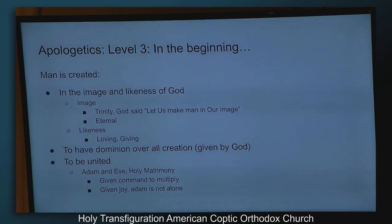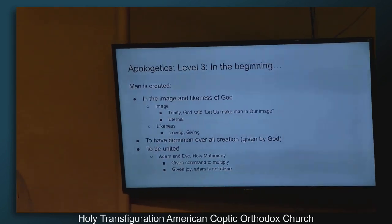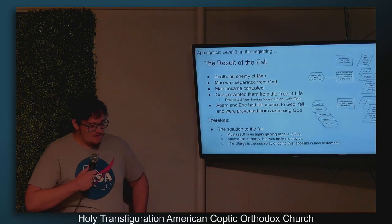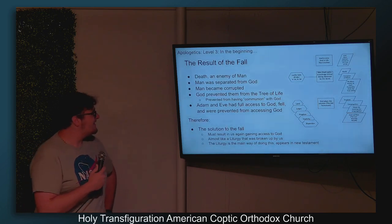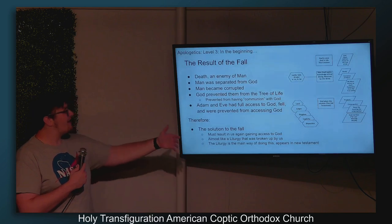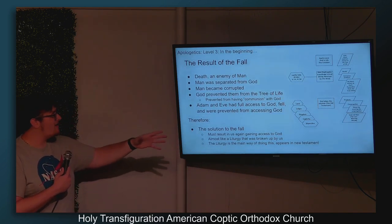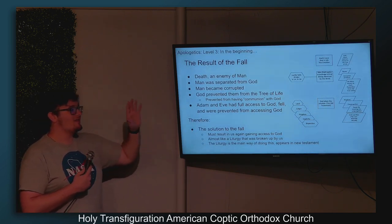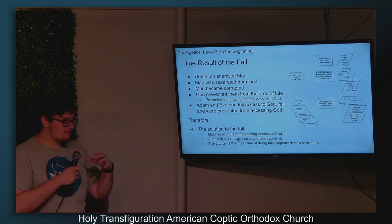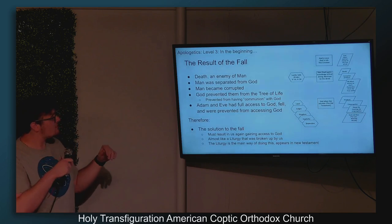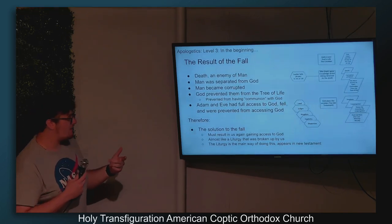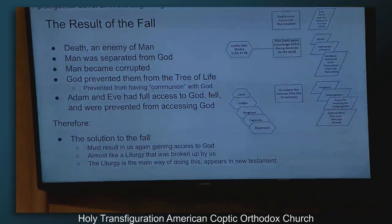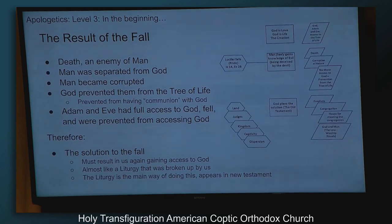We were also created to be united — we see that with Adam and Eve, our sacrament of matrimony — and we were given a command to multiply. Through this we were also given joy, because Adam was not just a lone person in the world. As a result of the fall, death came into the world. Death is an enemy of man, and when death entered, man was separated from God, man became corrupted, and then God prevented Adam and Eve from the tree of life, pulling us further and further apart — preventing us from having communion with God.